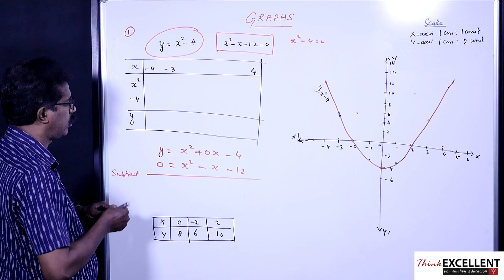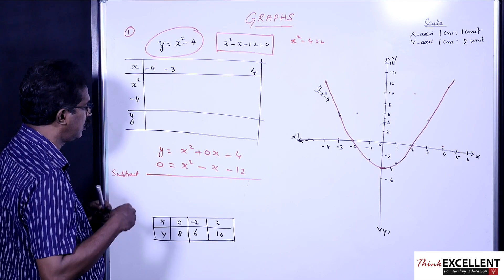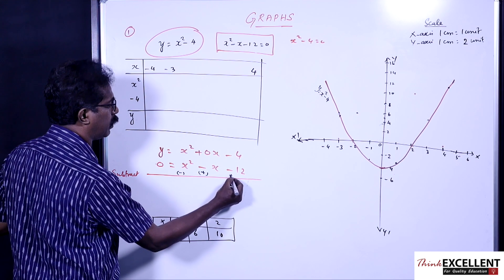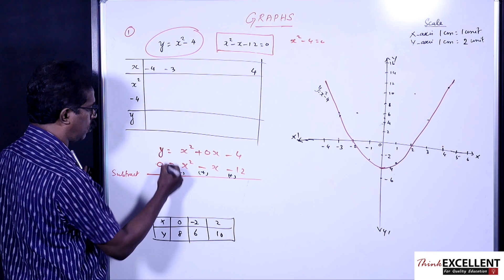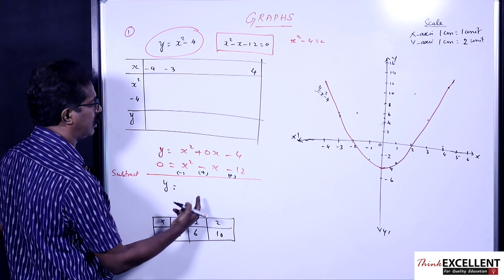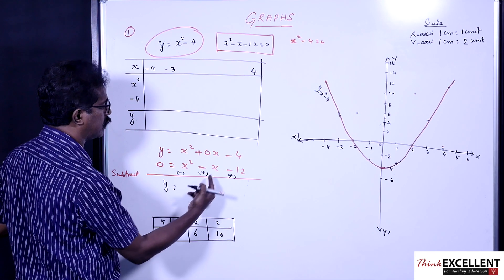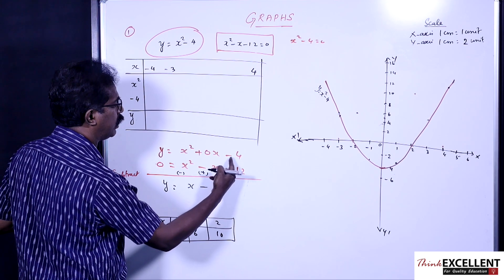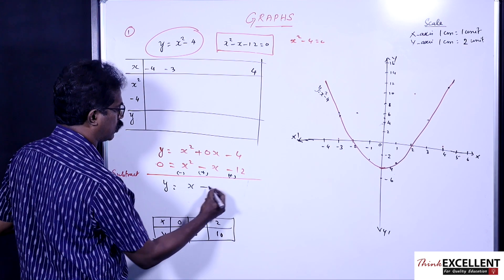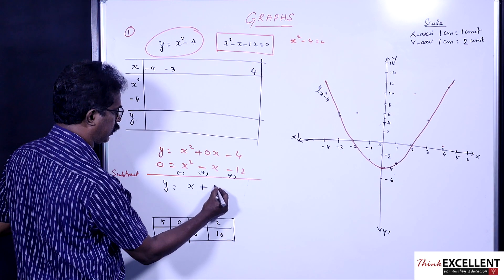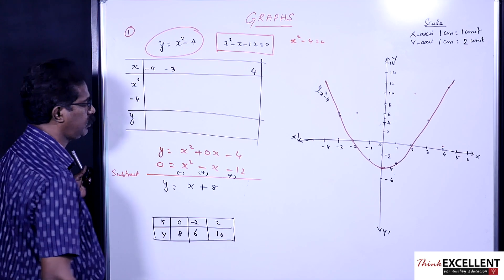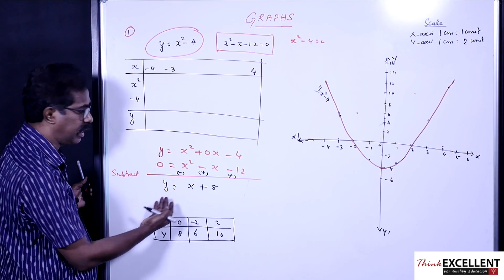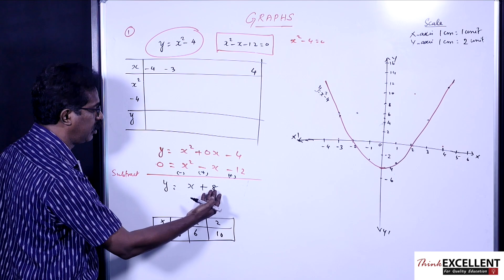When you subtract, you change the sign of the bottom equation. So: y = x² + 0x - 4, minus (x² - x - 12 = 0). The x² cancels. You get: y = 0x - (-x) = +x, and -4 - (-12) = -4 + 12 = +8. So y = x + 8.